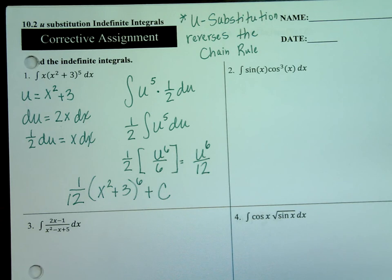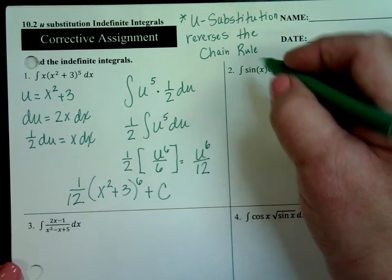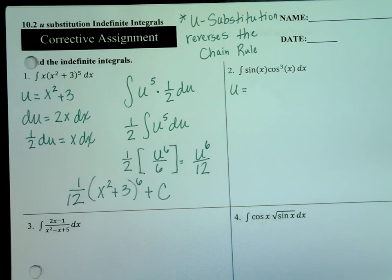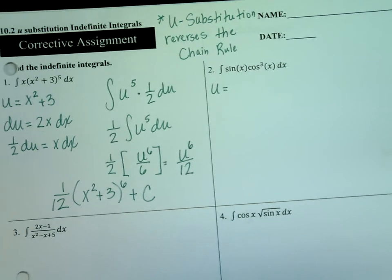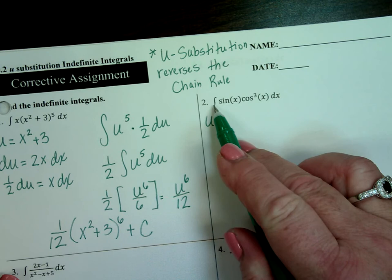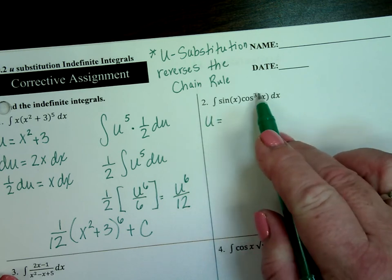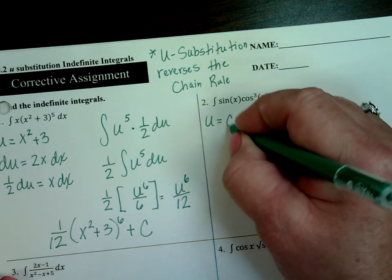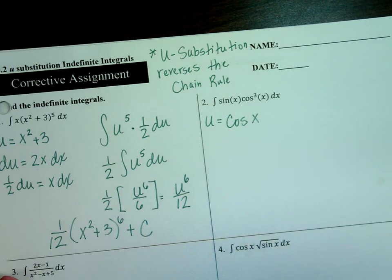How about number 2? I've got to decide what to make my u, and you're seeing the trig functions. Which one's in a messier spot? Cosine's in a messier spot — he's being cubed, to the 3rd power. So the integral is sin(x) cos³(x). The messier part is the cubed part, so cosine is going to be my u.